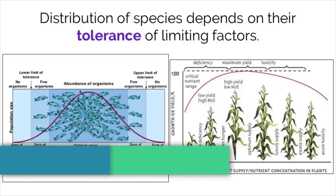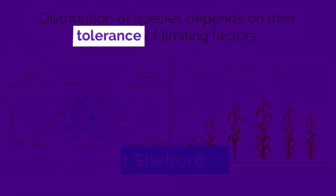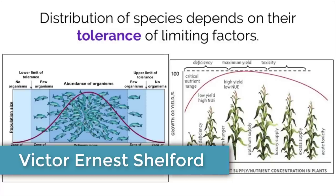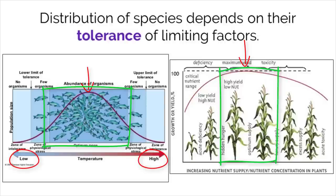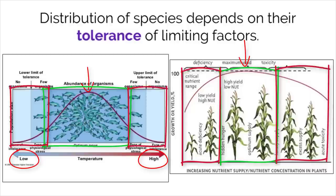A scientist by the name of Victor Ernest Shelford proposed the idea of tolerance, describing how populations live within the realm of limiting factors. This law of tolerance states that populations have optimal survival conditions within critical minimal and maximal thresholds. Most organisms thrive within their optimal range, where organisms that fall near the tolerance limit experience too much stress for them to live or grow efficiently. Many scientists today take advantage of this knowledge to grow crops in optimal conditions where they know they will get the highest returns.